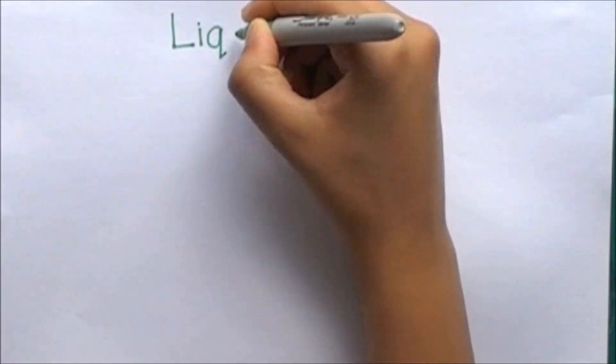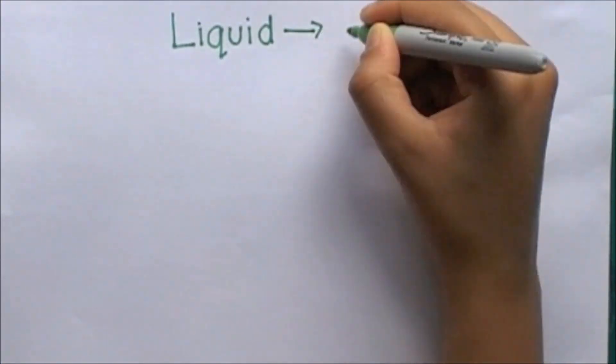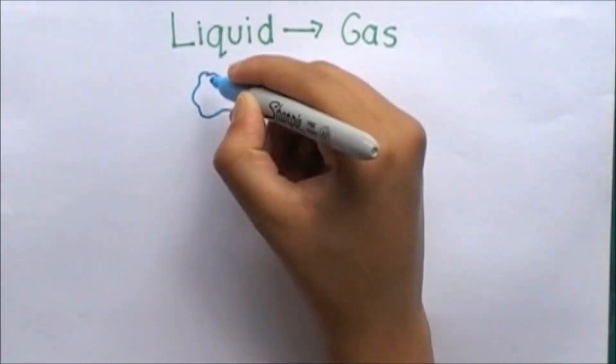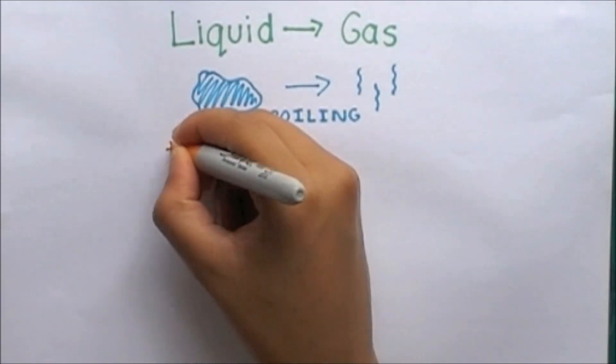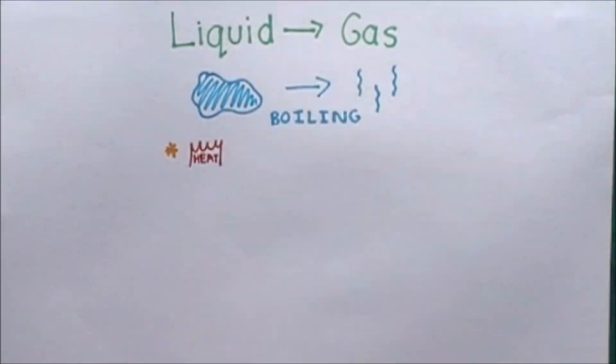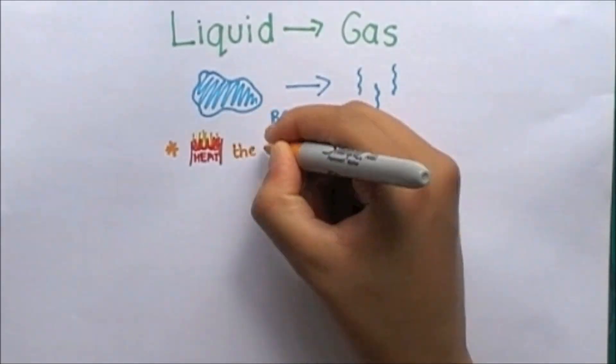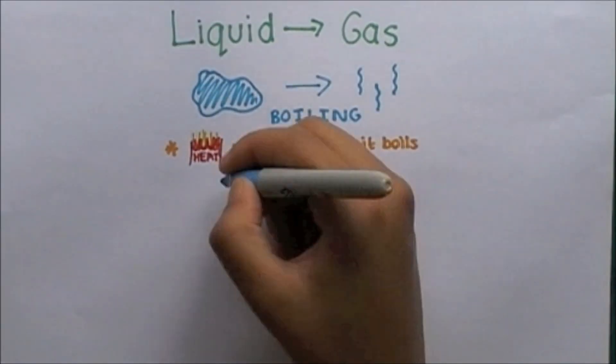The change from a liquid to a gas is called boiling. This change is brought about by heating the liquid until it boils into a gas.